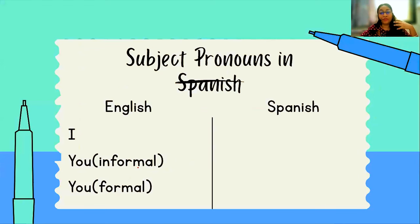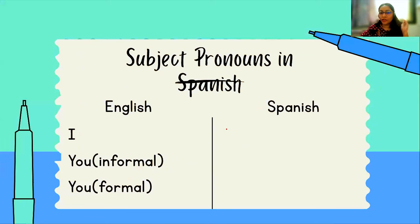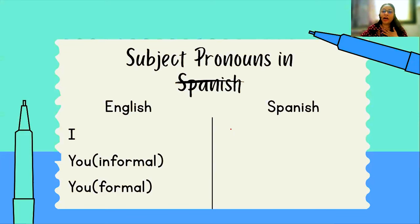Now that we have understood what a personal pronoun is, let's look at the Spanish personal pronouns. On the left side, as you can see, I have written down the English ones, and today we are going to look at the Spanish counterparts. Let's start with the first one: I. How do I say 'I' in Spanish? I am going to say 'yo' — Y-O, yo.